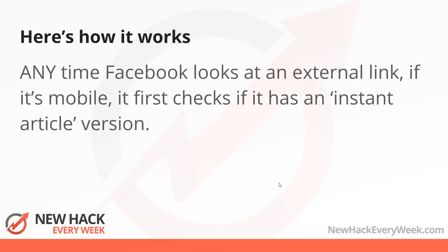Here's how it works. Any time Facebook looks at an external link — let's say there's an ad going to www.newhackeveryweek.com slash article name — if it's on mobile and it's an instant article enabled device, it'll first check if it has an instant article version. Facebook will say, before we send them over to that website, let's see if we've got an instant article version of that exact same content. The idea is that your instant articles will reflect what you actually have on that page, so for each URL on your site that's content you could have an instant article version. There are ways to automate that.